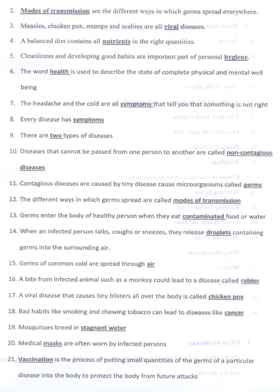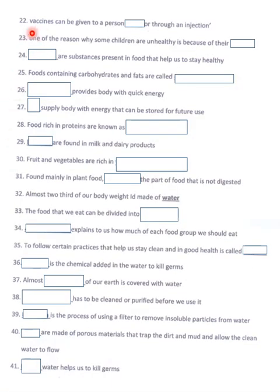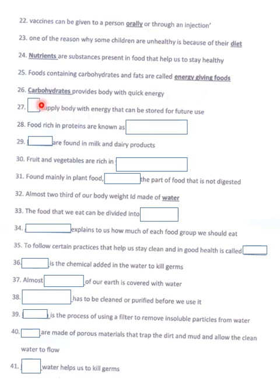I hope and wish you the best of luck in your exams. Vaccines can be given to a person orally or through an injection. One reason why some children are unhealthy is because of their diet. Nutrients are substances present in food that help us stay healthy. Food containing carbohydrates and fats are called energy-giving foods. Carbohydrates provide the body with quick energy. Fats supply the body with energy that can be stored for future use. Food rich in proteins are known as bodybuilding foods.